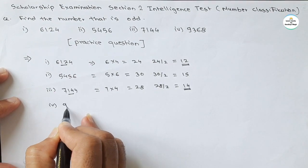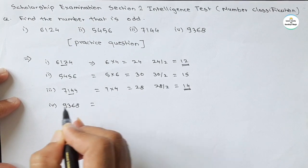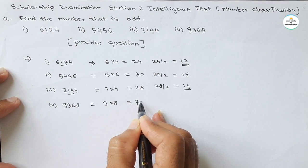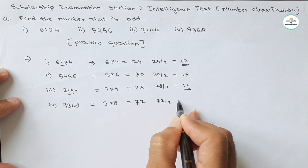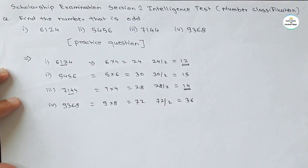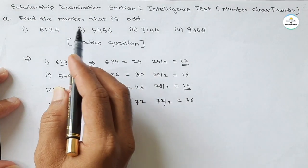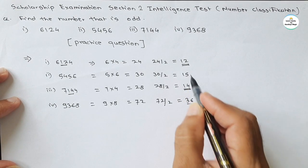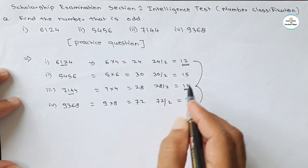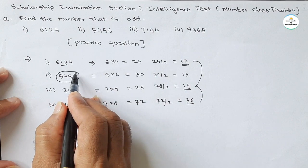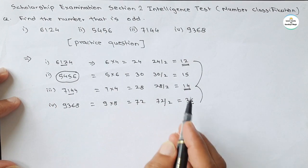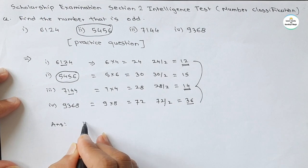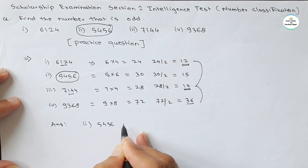For the last number 9368, if we take the multiplication of the first digit and last digit — 9 into 8 — we get 72. And 72 divided by 2 gives 36, so 36 is there. This is the simple way to find the odd number. Which is the odd number? Because the first, third, and fourth numbers all follow this relation, but 5456 does not follow this relation. So the second number, 5456, is the odd number.